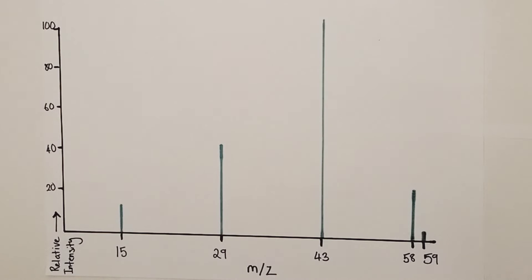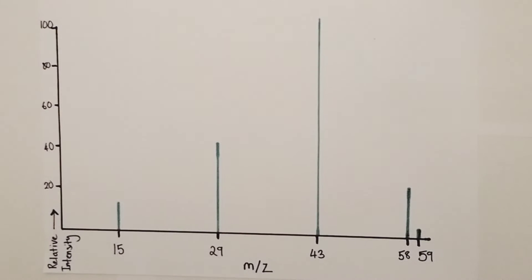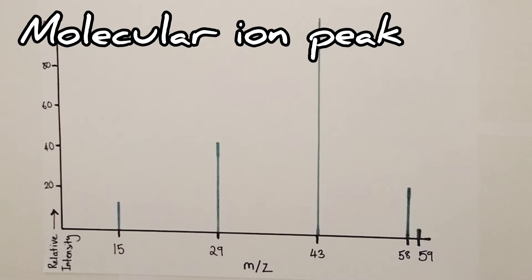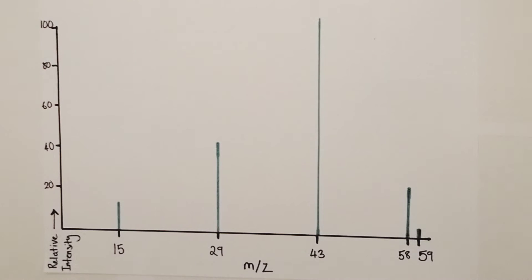But first of all, I want to talk to you about how to identify what is known as the molecular ion peak, which in this case would have been for the mass of butane. Right, so when presented with a novel mass spectrum, you always want to try and find what is known as the molecular ion peak. That is the peak on the mass spectrum that corresponds with the molecular mass of the entire molecule, before it's been allowed to fragment.